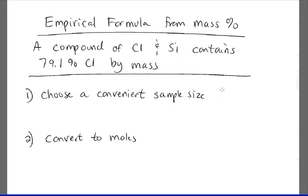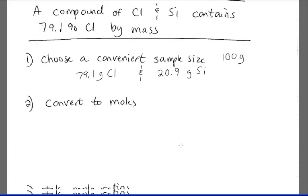The process is four steps. The first one is you choose some convenient sample size, and most of the time we'll just choose 100 grams. And why is that easy? That's convenient because then you can say that 79.1 grams of it is chlorine. So 79.1 grams of chlorine, and by subtraction you know how much silicon you have, which is 20.9 grams of silicon, because the total is 100 and we only have two elements in it. Remember, it doesn't matter which size we take because all we care about is the ratio.